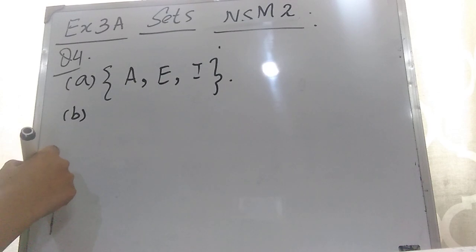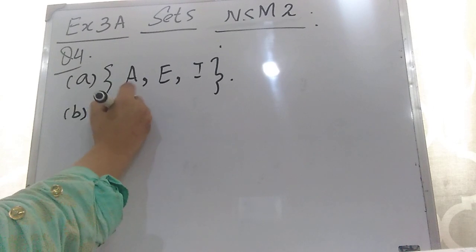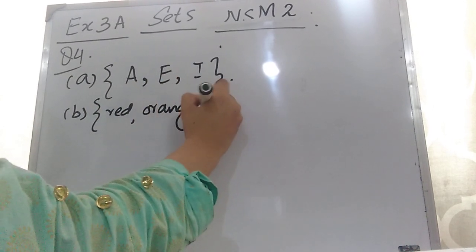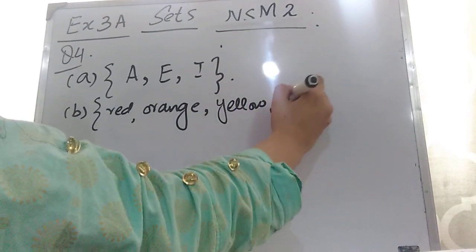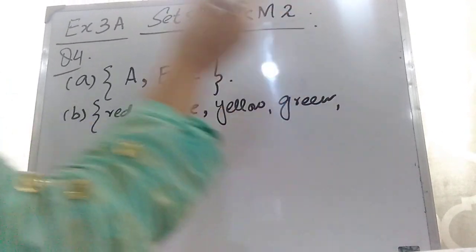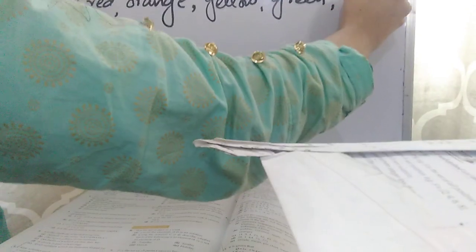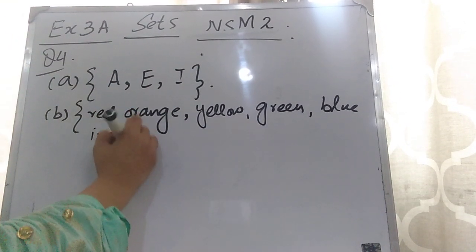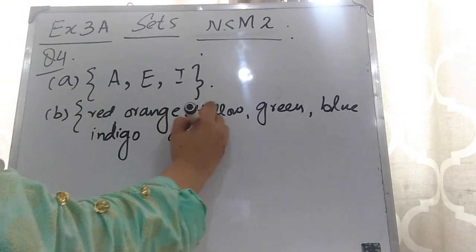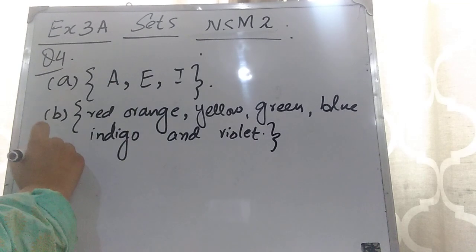Now part B: the 7 colors of the rainbow. You know that the 7 colors are red, orange, yellow, green, blue, indigo, and violet. So these are the 7 colors of the rainbow listed as elements of the set.